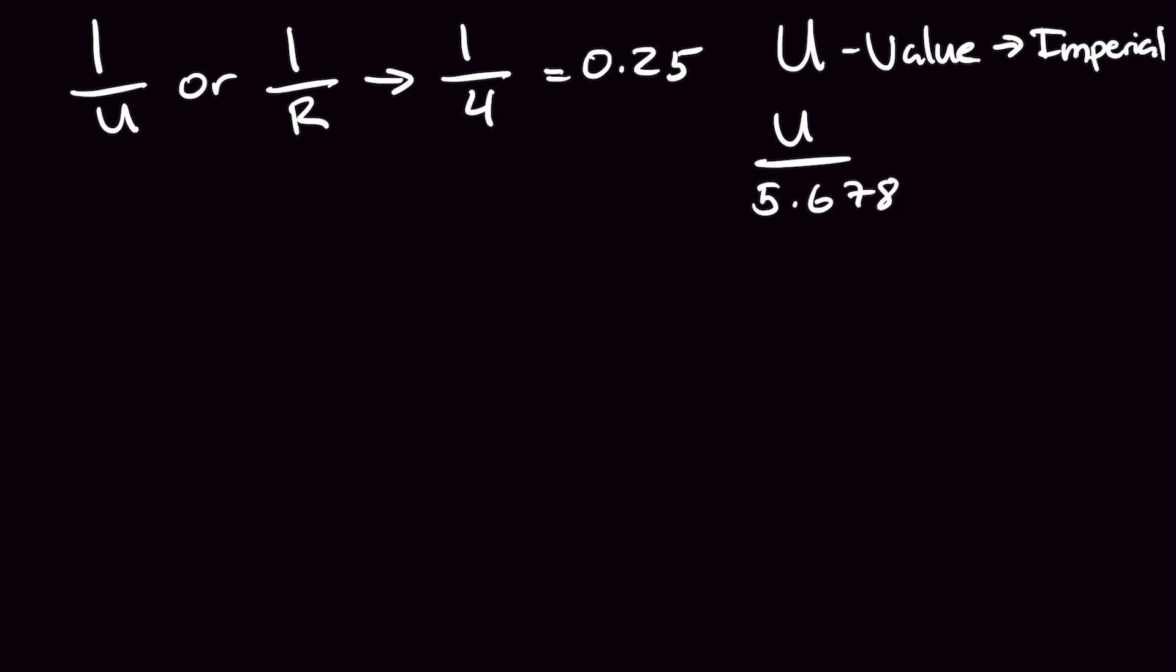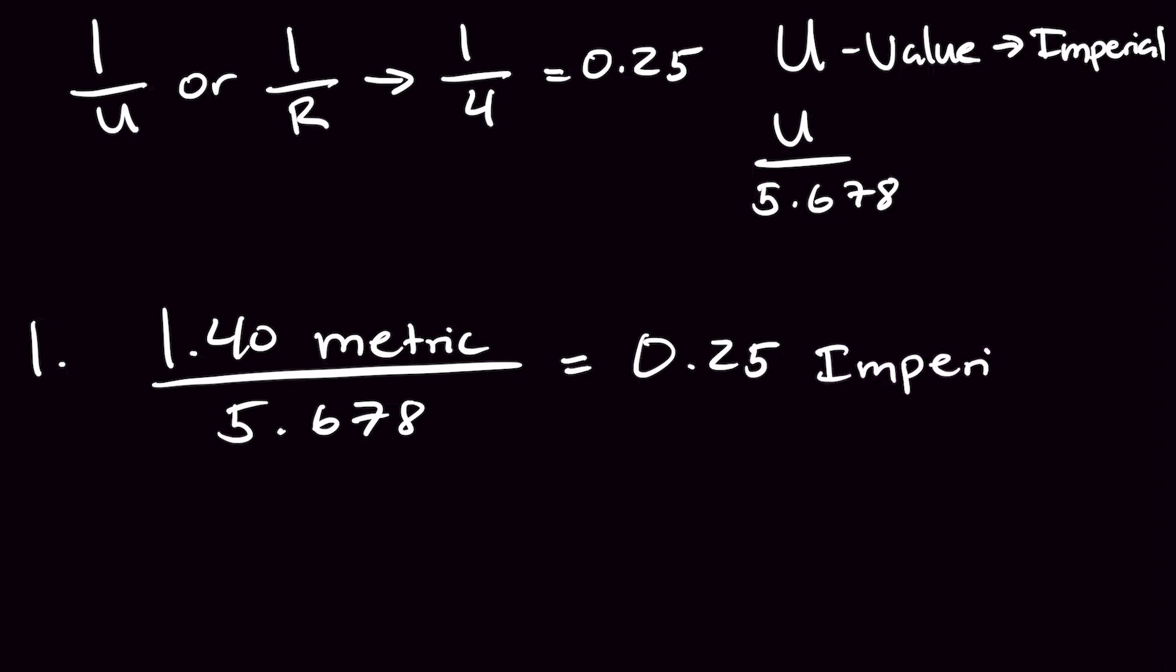So let's look at an example. In step one, we'll take the U value of 1.4, which is in metric, divide that by 5.678, which equates to 0.25 U value in imperial.